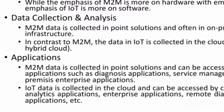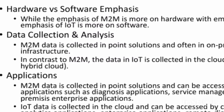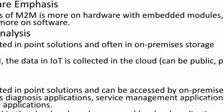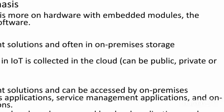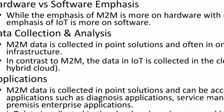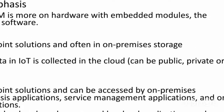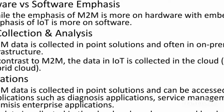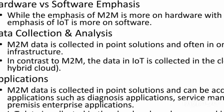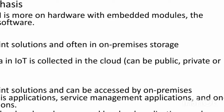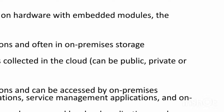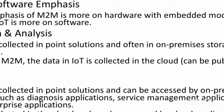Hardware versus software emphasis: While the emphasis of M2M is more on hardware with embedded modules, the emphasis of IoT is more on software. IoT focuses on software whereas M2M focuses on hardware modules. Regarding data collection and analysis, M2M data is collected in point solutions and often in on-premises storage infrastructure.